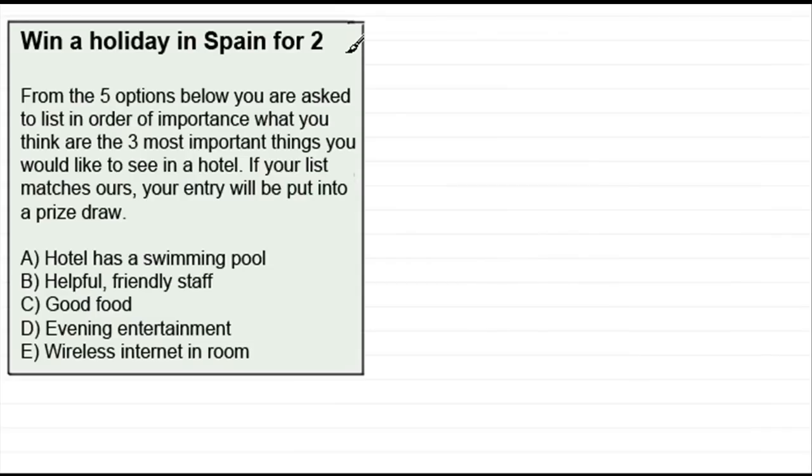Suppose you saw this competition in a paper: win a holiday in Spain for 2. What you've got to do is, you've got five options down here, and the organiser of the competition has asked you to select what you think are the three most important options in order from the five.